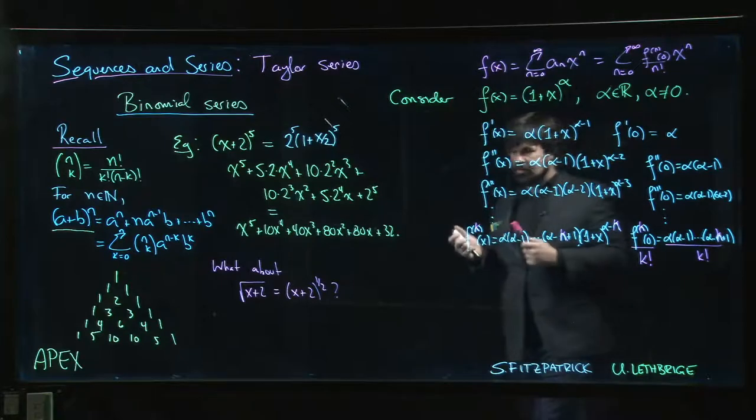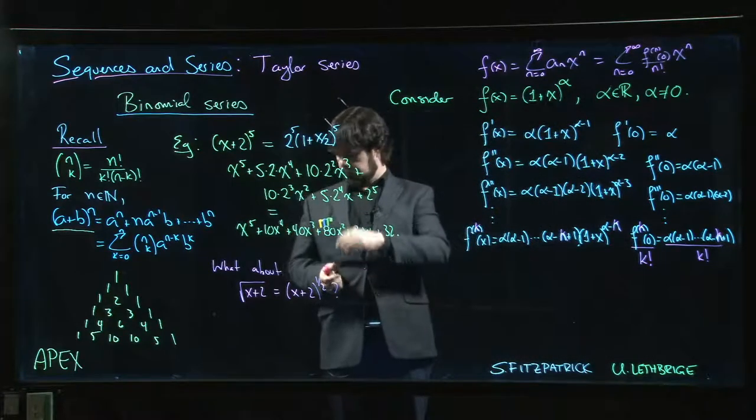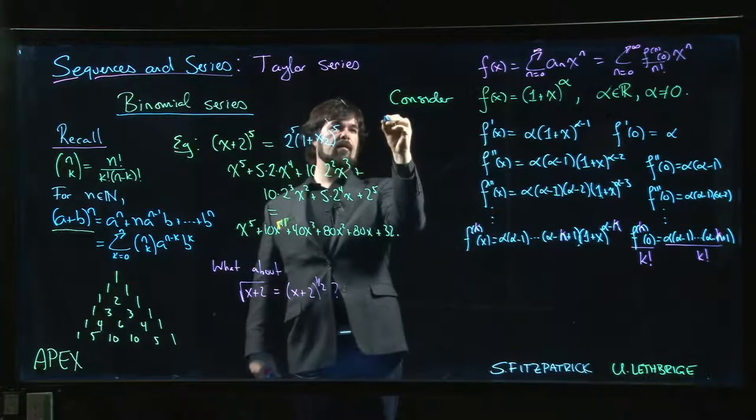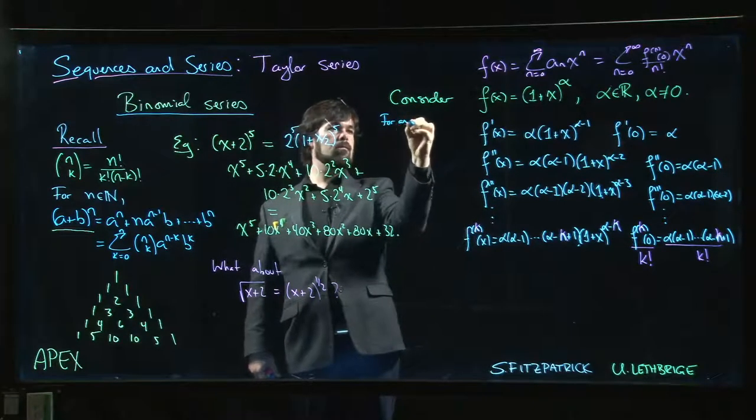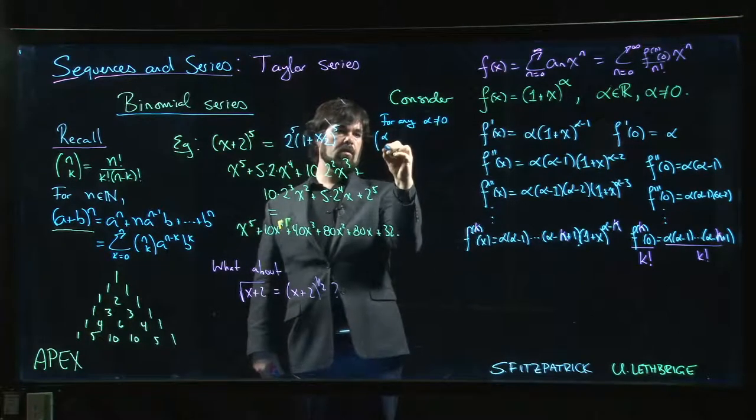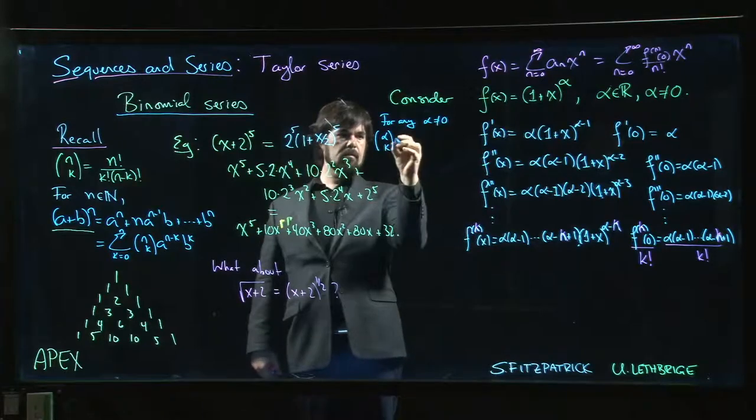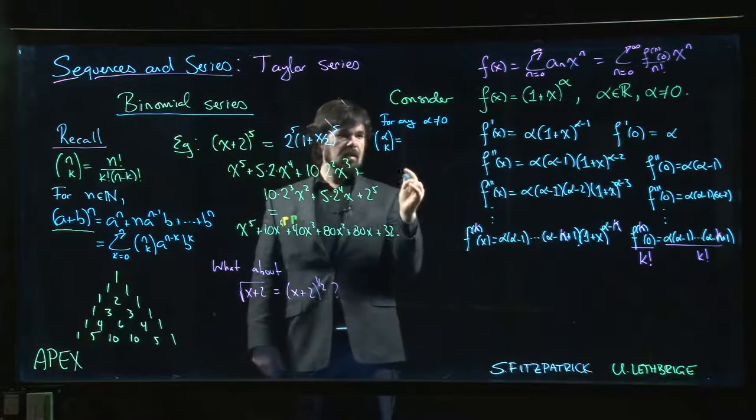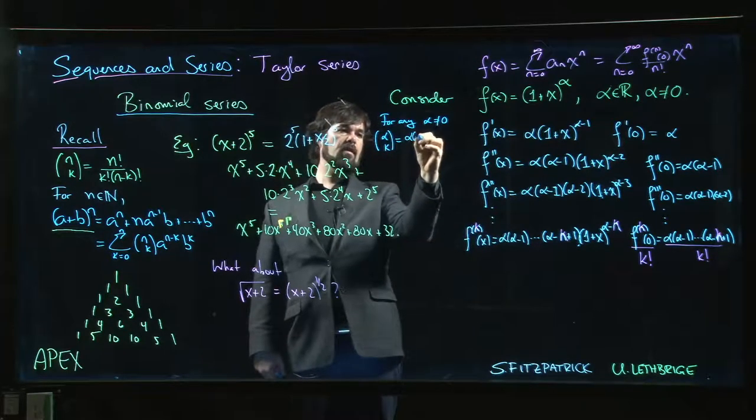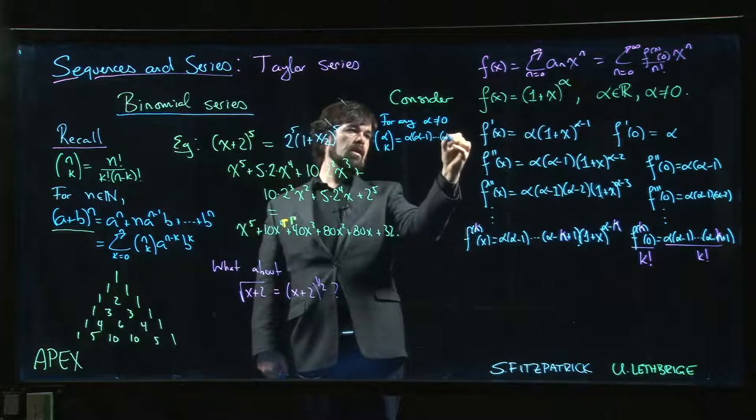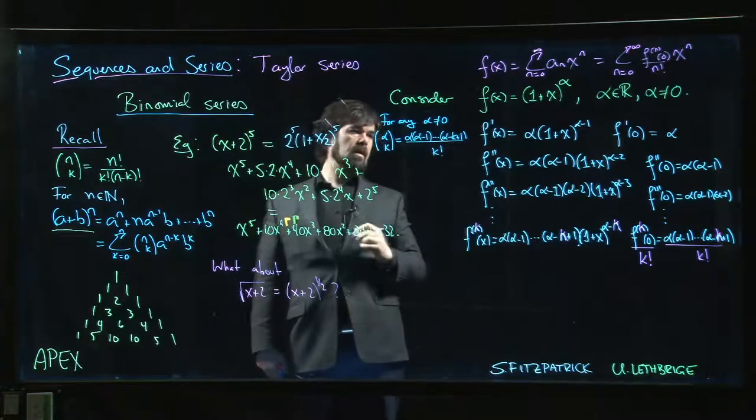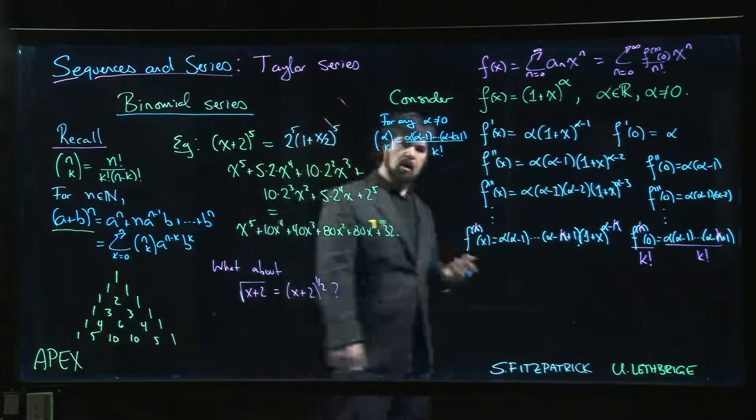Okay, well, there's a convenient notational trick that we introduce here. We introduce this notation: we say that for any real number alpha not equal to 0, we denote by alpha choose k—still read it as alpha choose k, even though it has really maybe nothing to do with counting anymore—this product alpha times alpha minus 1 down to alpha minus k plus 1 over k factorial.